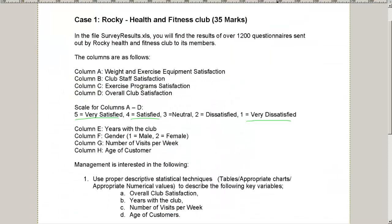If we go back to the sheet here, there is an indicator that 1 is male for the gender variable, and 2 is female. We also have number of visits per week and the age of the customer. So we have a lot of different variables.